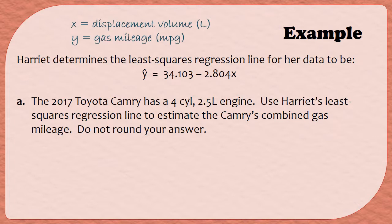So for Part A, the 2017 Toyota Camry has a four-cylinder, 2.5 liter engine. We're going to use the least squares regression line to estimate the Camry's combined gas mileage, and we're told specifically not to round our answer. Now, when I pull out the relevant information from this paragraph, the important part is that the Camry has a 2.5 liter engine. This is telling us the displacement volume of the engine. Since we've been told the displacement volume, that's going to be a value for x. So, when I use the equation of the least squares regression line, I'm going to substitute 2.5 in for x. So I have ŷ = 34.103 - 2.804 times 2.5. Notice that when we substitute into the equation, all I have are numbers on the right-hand side.